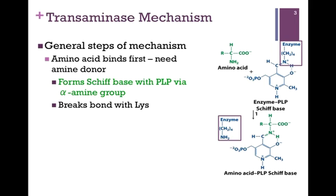As the amino acid binds, we break the bond with that cofactor, and here we have the lysine side chain highlighted in the purple square as now free and separate from that PLP cofactor. The entire amino acid gets added at that aldehyde group, and so now we have our entire amino acid covalently linked to this PLP cofactor.